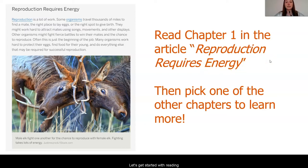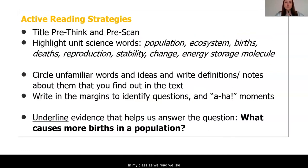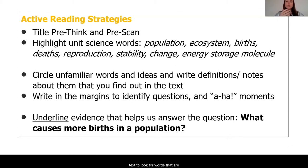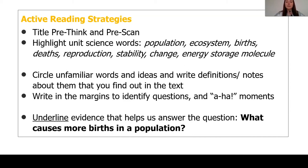Let's get started with reading the first chapter together. In my class, as we read, we like to do something called active reading strategies. The first thing is a title pre-think, which allows us to read the title and start forming ideas about what might be in the article. We also do an article pre-scan — a quick scan of the text to look for words that come up repeatedly or are unfamiliar. We highlight unit science words, circle unfamiliar words or new ideas, and write annotations including definitions, notes, aha moments, or questions.